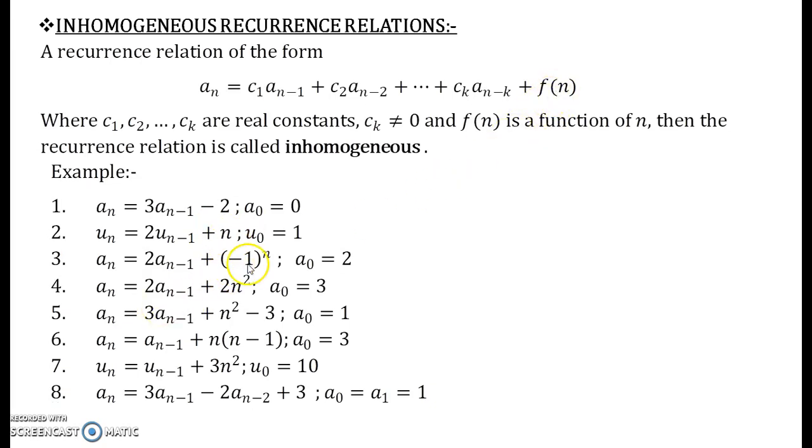For the third one it is minus 1 to the power n. For the fourth one it is 2 into n square. The fifth one is n square minus 3. Sixth one is non-trivial: it is n into n minus 1. So like that you can have various forms of your functions f of n in this inhomogeneous recurrence relation.